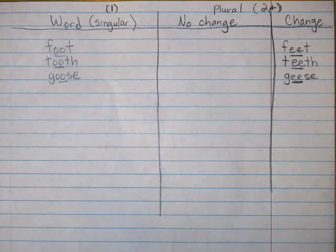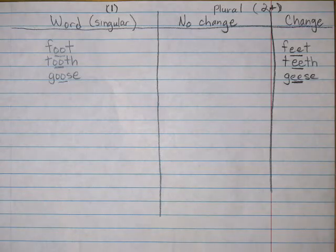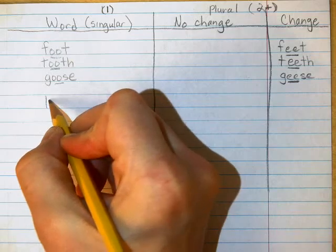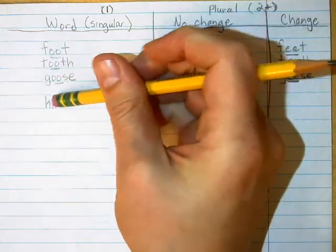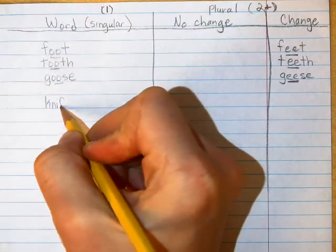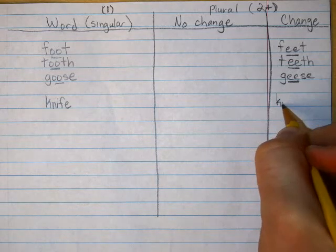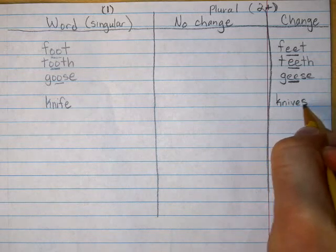Now, how about the word knife? What happens to knife when it changes? When you get some more in your house — you only had one knife, but then you got some more. So then you had what? Excellent. You had one knife — remember, there's a silent K at the beginning. And then it changes to knives.